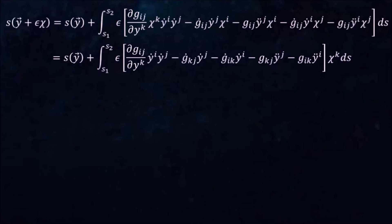Remember that in order for y to be a geodesic, this integral must be 0. But given that chi is arbitrary, this is possible only if the expression in the brackets is 0 for all components.